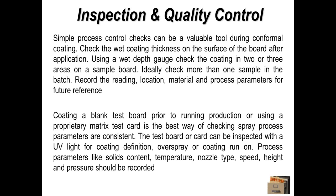You can get a correlation between wet thickness and the dried coating thickness. Recording this information is very useful for statistical process control and demonstrating to your customers that you have a controlled process. Another way of doing that is running a test board — I personally think it's important to run a test board in your conformal coating process prior to running on real products. It can be a blank board of the same design or a matrix test card. Suppliers like SimTech have matrix test cards for running test runs, looking at quality of coating application, and monitoring setup parameters such as temperature, nozzle type, and speed. Very simple, not time-consuming, but gives a level of confidence on process audits.